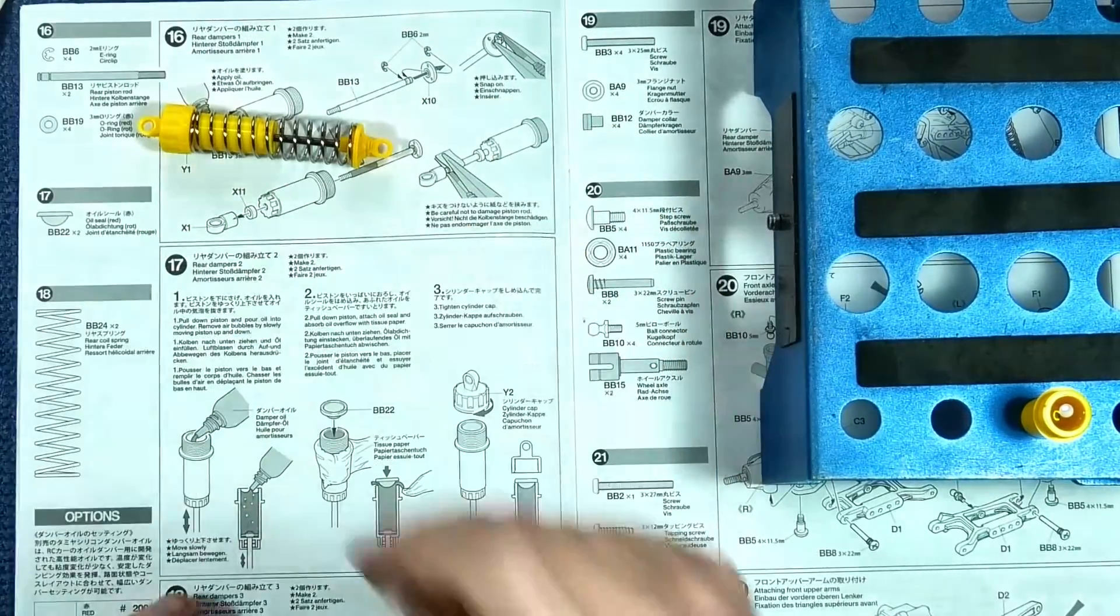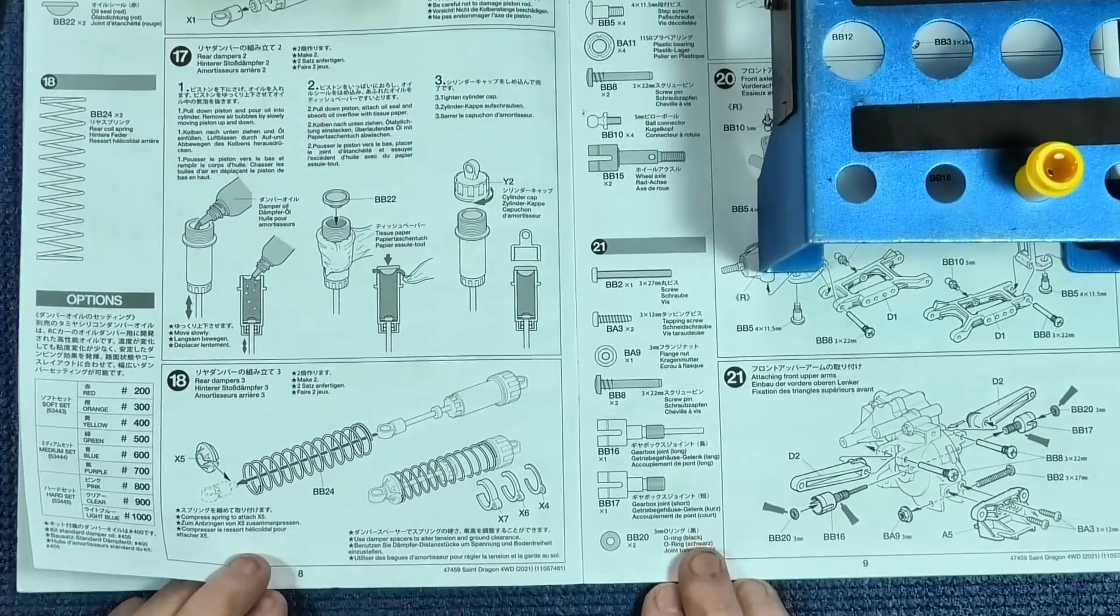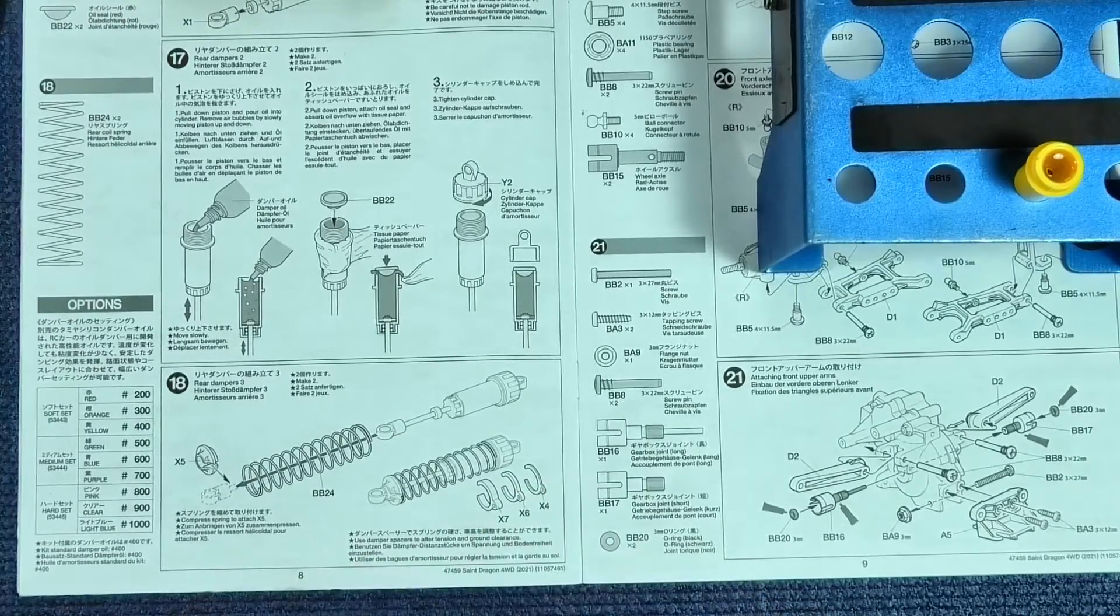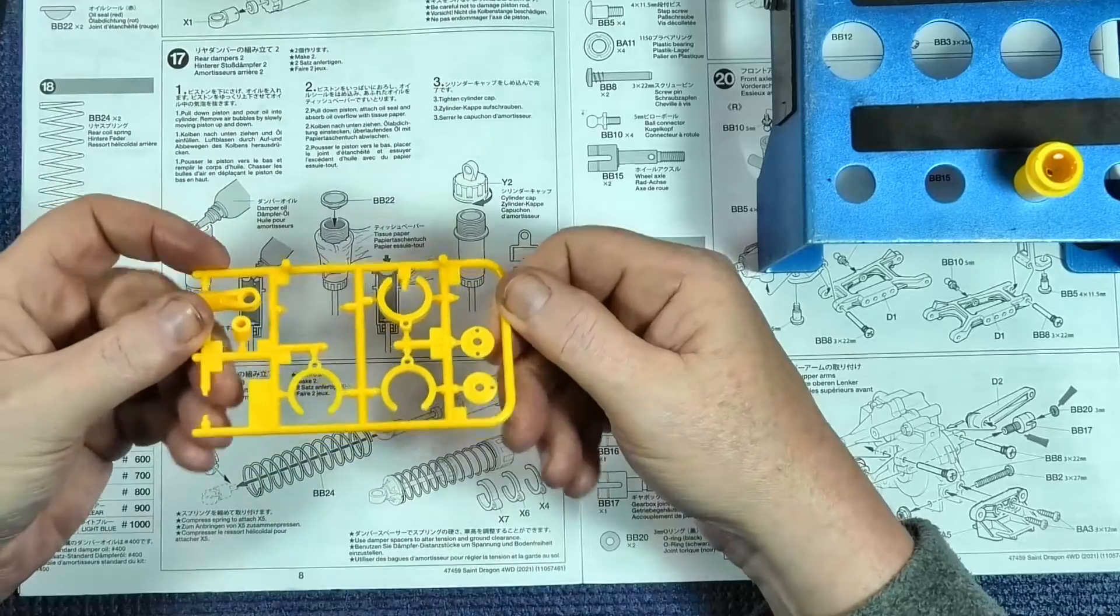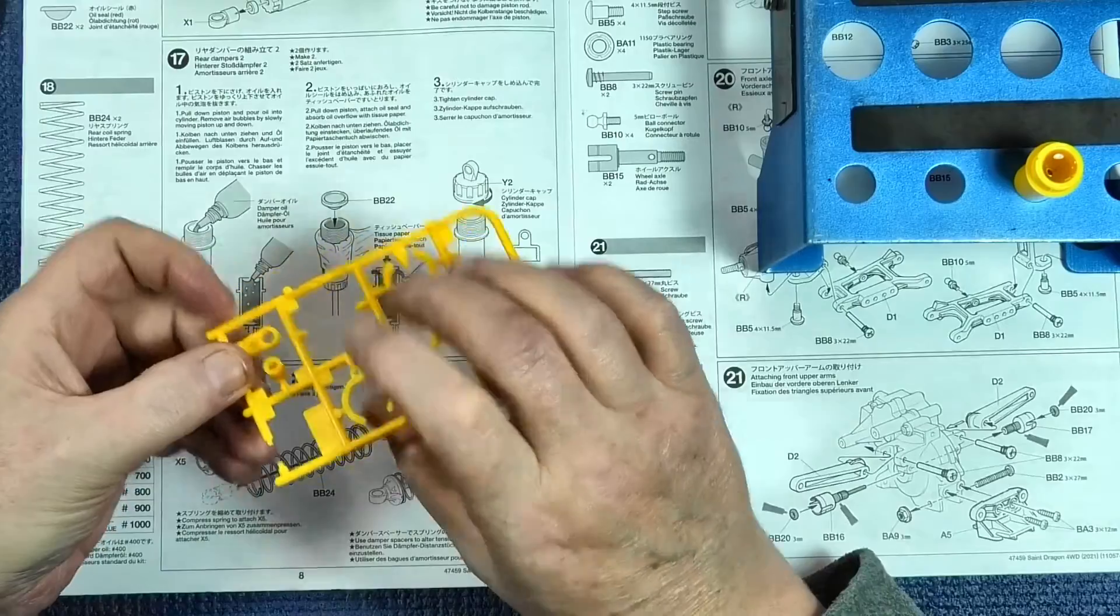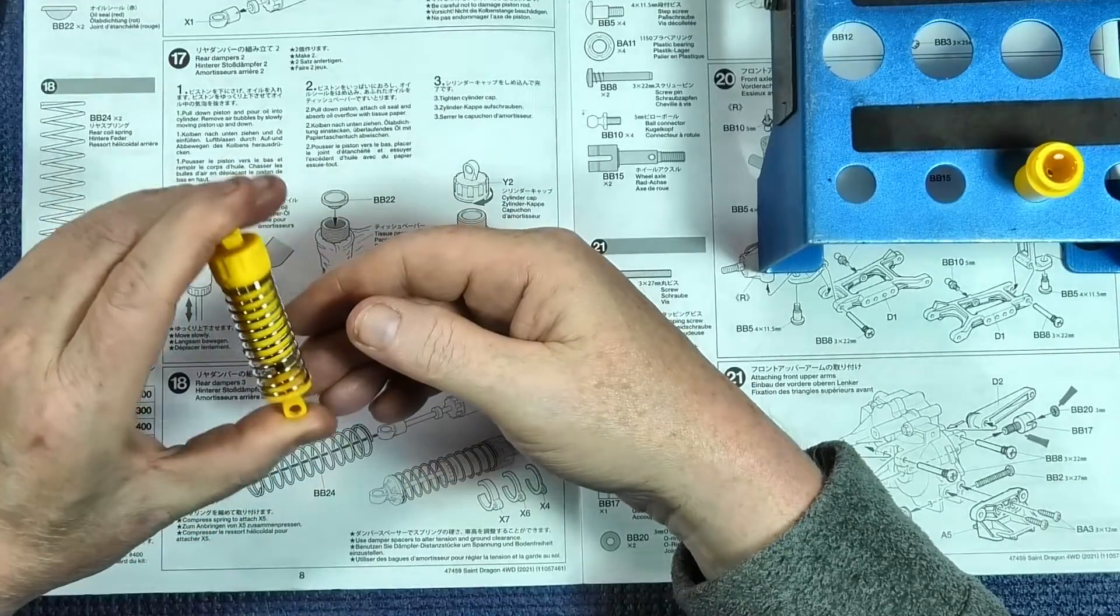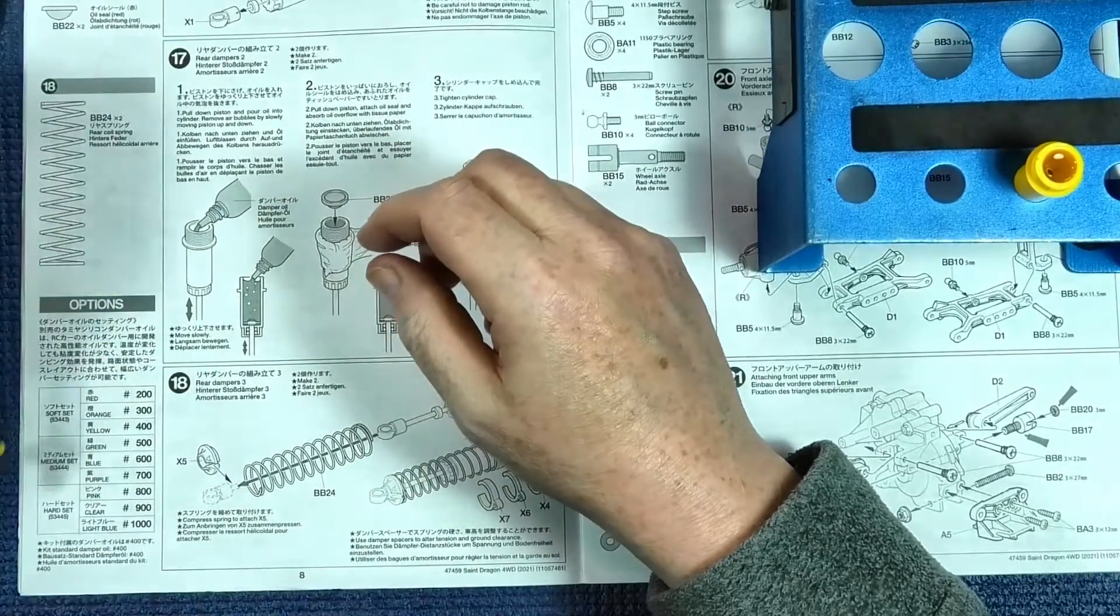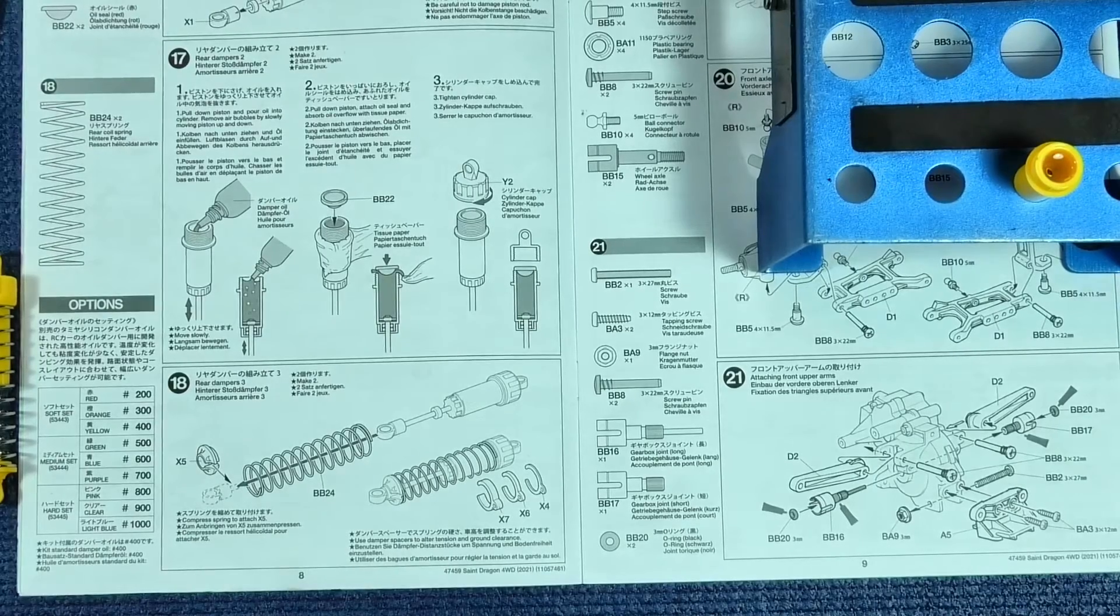Then part of step 18 is showing you can attach some preload to the shock springs if you want. We've got a thick one, medium, and a thin one. But at the minute, that doesn't feel too bad to me, so I don't think I'll put any on until I finish the car and see how it goes. I'll get on and finish the other one and come back for step 19.